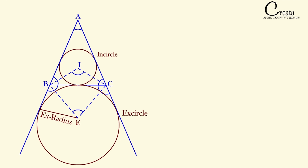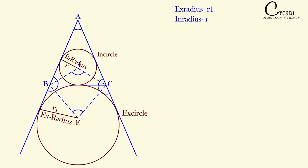The radius of the in-circle is the in-radius, and the radius of the x-circle is the x-radius. We will denote the x-radius as R1 and we have denoted the in-radius as R. I will compare the in-circle with the x-circle side by side.